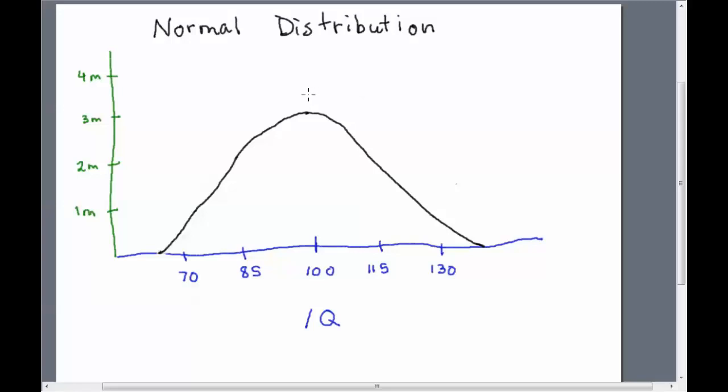In this case, we're looking at IQ scores. So here's IQ, intelligence quotient. And I've got an axis, the Y axis here, the vertical axis. And 1M means 1 million, 2 million, 3 million, 4 million.